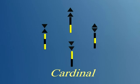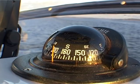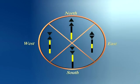There are four cardinal marks: north, east, south, and west. They are used in conjunction with your compass. Each cardinal mark indicates where the safest water is found, so that you can pass by the mark safely.